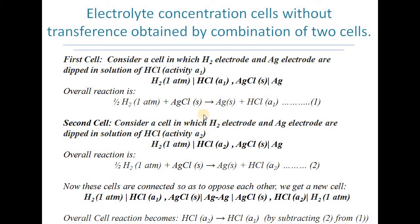These cells are connected to oppose each other, giving a new combined cell. The overall cell reaction is obtained by subtracting the second cell reaction from the first, since the cells are connected in opposition. The resultant reaction is HCl(A2) → HCl(A1), meaning one mole or one gram equivalent of HCl transfers from the solution of activity A2 to the solution of activity A1.